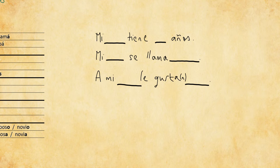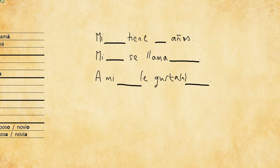Let's go ahead and fill them in. For example: 'Mi abuelo tiene setenta años' — my grandfather is 70 years old. You should already be able to fill these in since we just covered the vocab, and you should already know numbers. Notice the word 'tiene', which we've covered previously — it's from the verb 'tener', meaning 'to have', and it is a partially irregular verb.